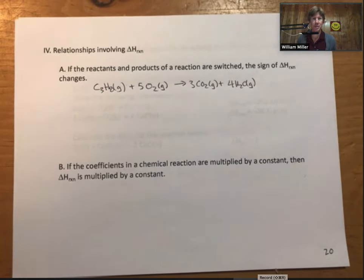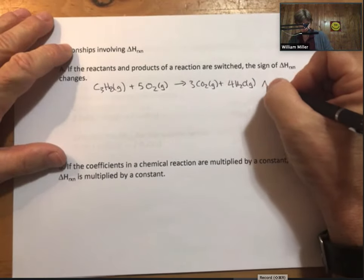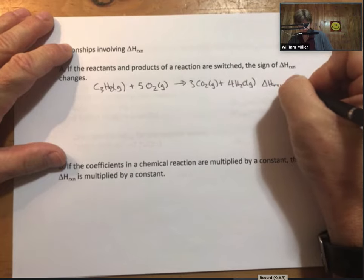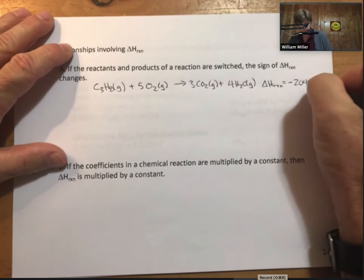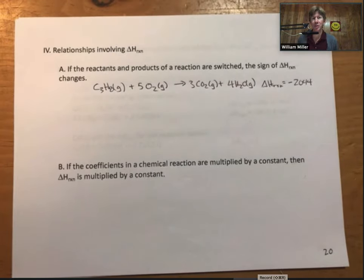What we've said previously is that delta H reaction for this is negative 2,044 kilojoules per mole.